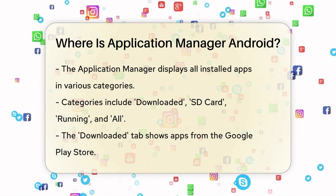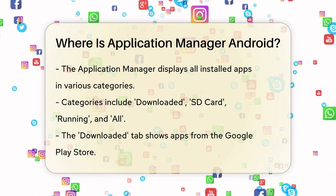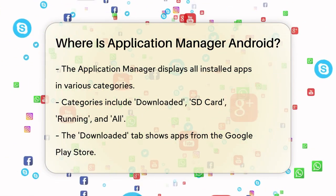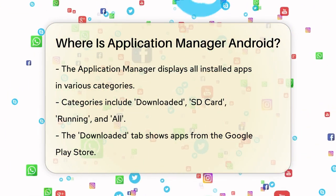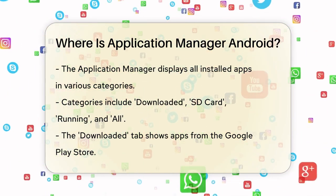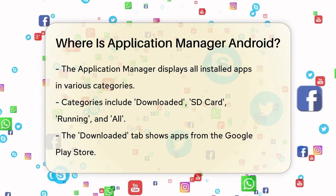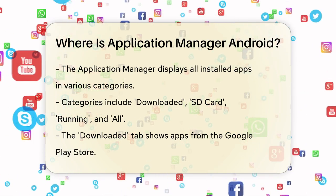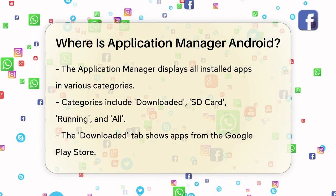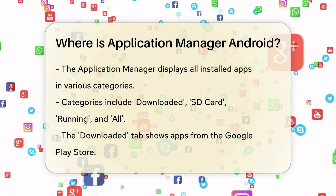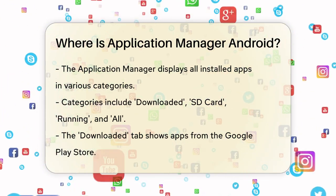When you open the Application Manager, you'll see all your installed apps categorized into different tabs. These tabs include Downloaded, SD Card, Running, and All.